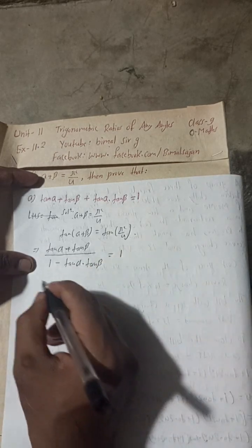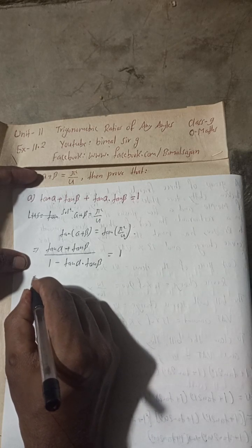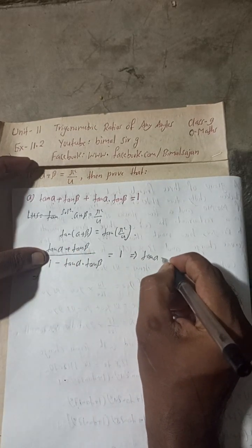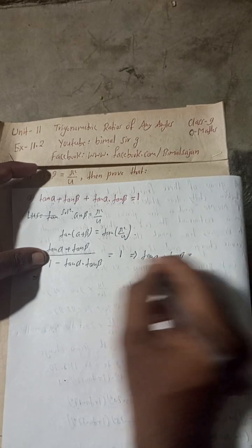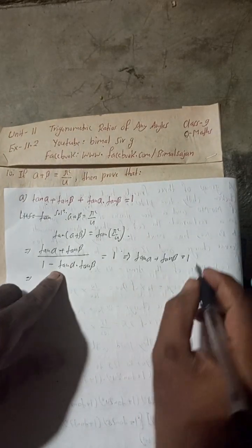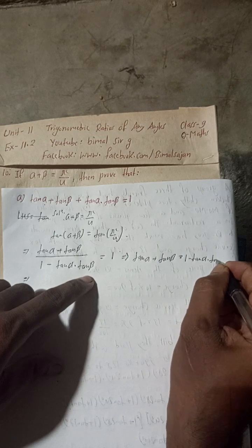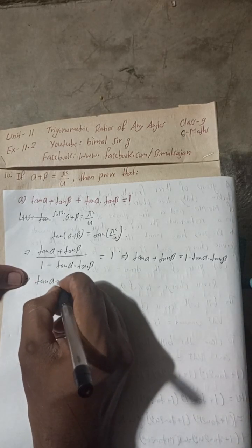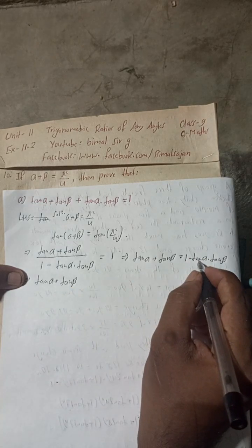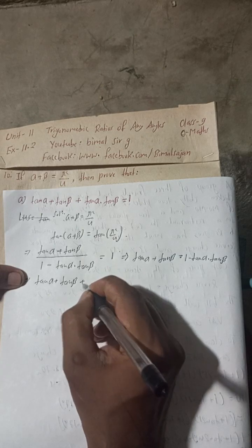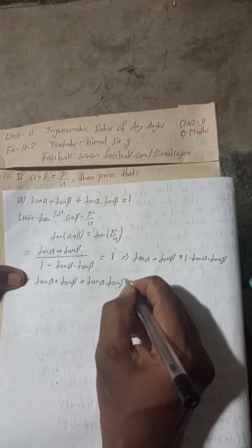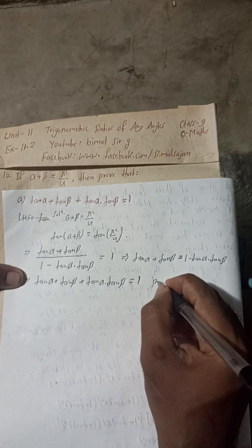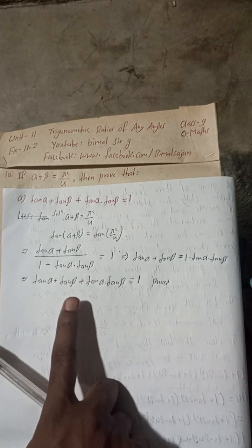Now cross multiply this. You will get: tan alpha plus tan beta equals 1 minus tan alpha into tan beta. Rearranging — take the tan alpha·tan beta to the left side, it becomes plus. So we get: tan alpha plus tan beta plus tan alpha·tan beta equals 1. Hence proved. This is the solution of 10a.